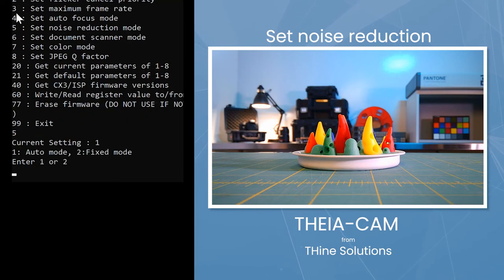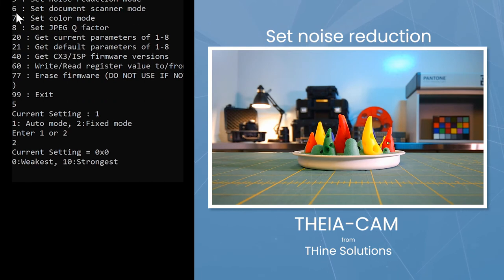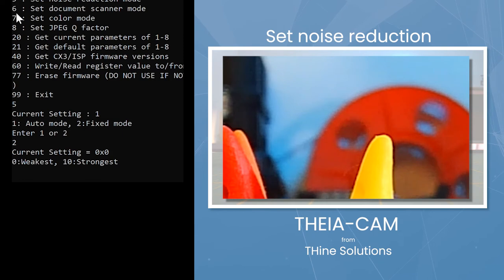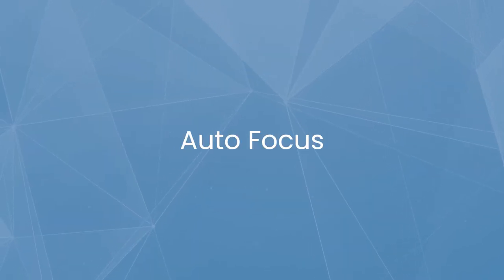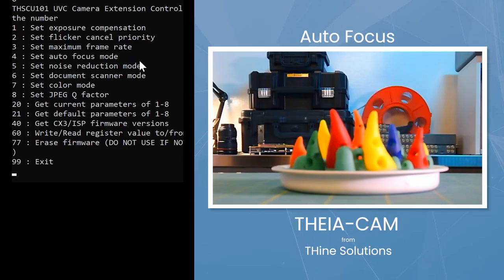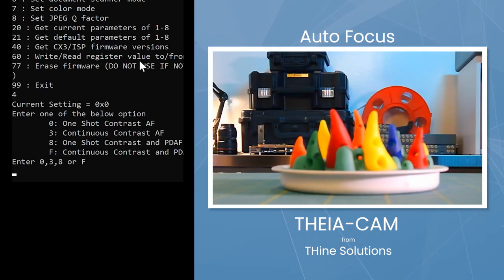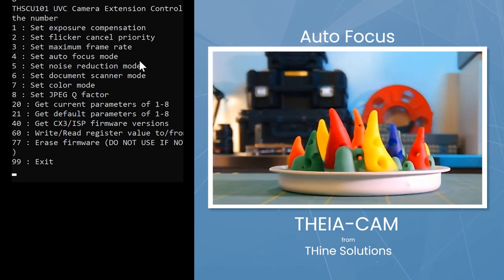To make adjustments to noise reduction, we will enter 5. You will have a choice of 1 for auto mode and 2 for fixed mode. We will enter 2. We now have a choice of 0 or weakest all the way up to 10 for the strongest noise reduction. Let's enter 10. Now let's try autofocus. To adjust focus, you will enter the number 4. You have several options including Thine Solutions PDAF Autofocus.